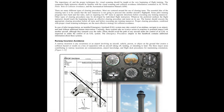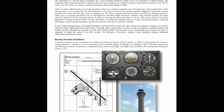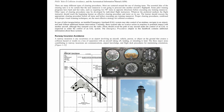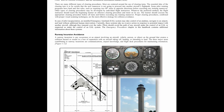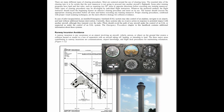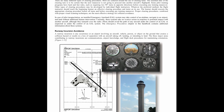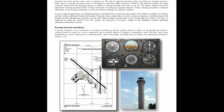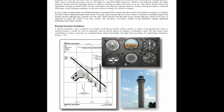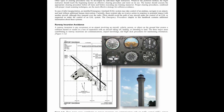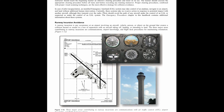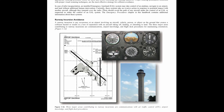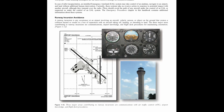In the case of pilot incapacitation, an installed emergency autoland (EAL) system may take control of an airplane, navigate to an airport, and land without additional human intervention. Currently these systems take no evasive action in response to potential impact with another aircraft, although they do transmit over the radio. Pilots should avoid the path of an aircraft under the control of an EAL system or suspected as such. The emergency procedures chapter contains additional information about these systems.